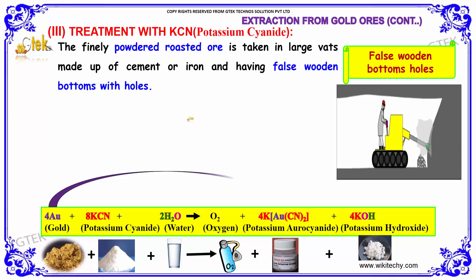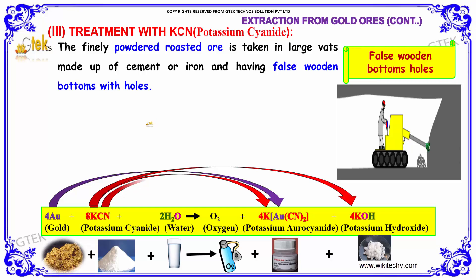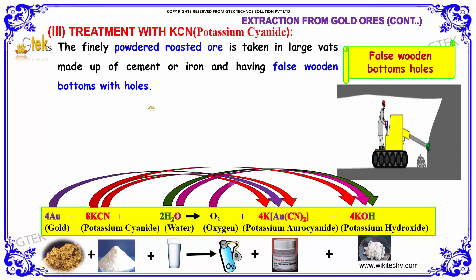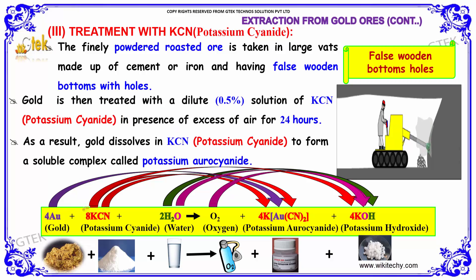Treatment with potassium cyanide. The finely powdered roasted ore is taken in large vats made up of cement or iron and having false wooden bottoms with holes. Gold reacts with potassium cyanide and water in the presence of oxygen to form potassium aurocyanide and potassium hydroxide. The gold is treated with a dilute 0.5% potassium cyanide solution in the presence of excess air for 24 hours, dissolving the gold to form a soluble complex called potassium aurocyanide.